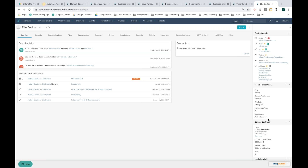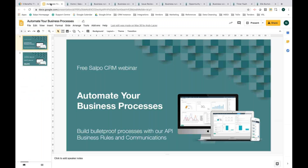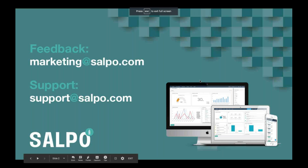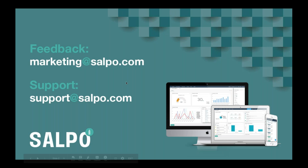I hope this webinar helps you deliver the right content to the right person at the right time, and you'll be able to take advantage of automation moving forward using Salpo. If you have any questions, don't hesitate to reach out. Feedback can be sent to marketing@salpo.com, and any questions about the system, setup, or a specific use case can be sent to support@salpo.com. If you reach out to either team, they'll get you in touch with the right person. Thanks again for joining, and we look forward to speaking soon.